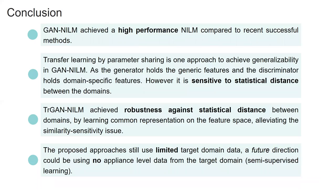In this presentation, we showed how GANs can be used to achieve high-performance NILM solutions by proposing the GAN-NILM model. We showed how to apply transfer learning by parameter sharing to GAN-NILM, finding that the generator mostly holds generic features while the discriminator holds domain-specific features, and how this approach is sensitive to the statistical distance between source and target domains. We alleviated this by proposing TR-GAN-NILM, which learns common representations in the feature space between domains. The current approach uses limited target domain data, and a possible future extension could study using no appliance data from the target domain in a semi-supervised manner. Thank you very much.